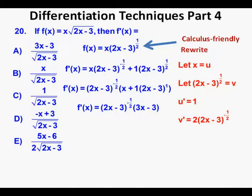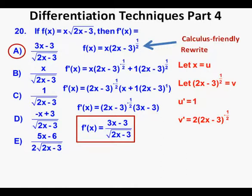Converting (2x − 3)^(−1/2) back to radical form, we have f'(x) = (3x − 3) / √(2x − 3). We box in our answer and circle the correct multiple choice answer, A. In this problem we used the product rule, power rule, and chain rule, but the most challenging part was not the calculus itself — it was the algebraic simplification, specifically factoring out (2x − 3)^(−1/2).